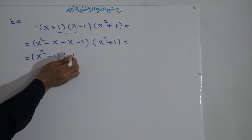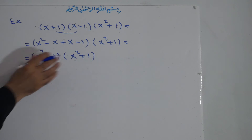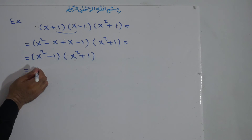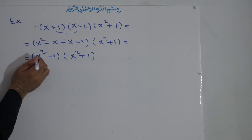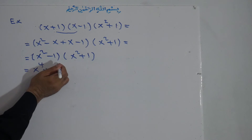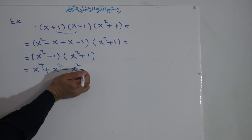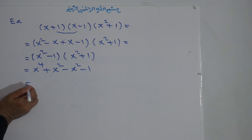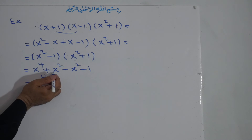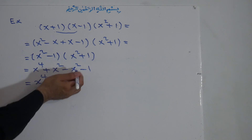Then we multiply these two polynomials: (x squared minus one) times (x squared plus one). First term: x squared times x squared is x to the power of 4. Then positive times positive: x squared times one is positive x squared. Negative one times x squared is negative x squared. Negative one times positive one is negative one. The positive x squared and negative x squared cancel each other, leaving x to the power of 4 minus one.